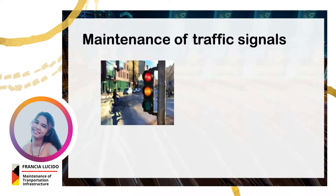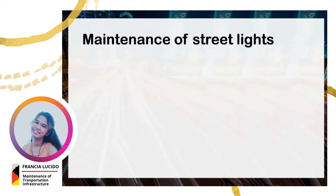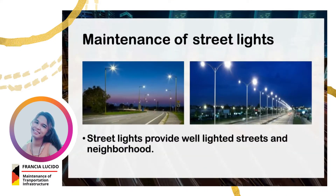Maintenance of traffic signals: Traffic signals offer maximum control at intersections. They relay messages of both what to do and what not to do. The primary function of any traffic signal is to assign right-of-way to conflicting movements of traffic at an intersection. It is also essential to maintain streetlights or highway lights. Streetlights provide well-lighted streets and neighborhoods. By illuminating roads, highways, parks, and other public spaces, we reduce the risks of accidents such as nighttime crashes and reduce the risk of injuries as well as unwanted crimes. Therefore, traffic signals and streetlights are extremely necessary as they ensure the safety of vehicles and pedestrians, and it is essential that signals and lights be maintained to remain functional and efficient at all times.